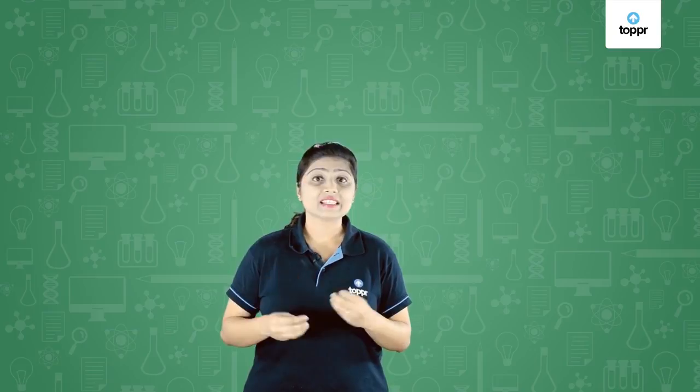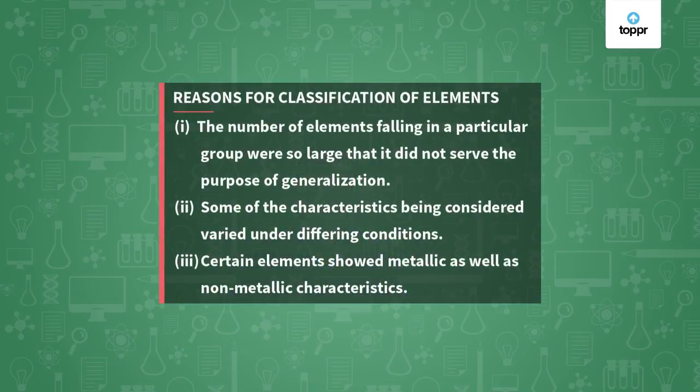The same thing had happened in the 18th century. There were many elements that scientists knew about, but they were never classified. So there was a need for classification of elements so that scientists could know which elements show similar properties. In the beginning, attempts were made by chemists to classify elements on the basis of factors such as density, malleability, ductility, and also to consider whether they are metals or non-metals.